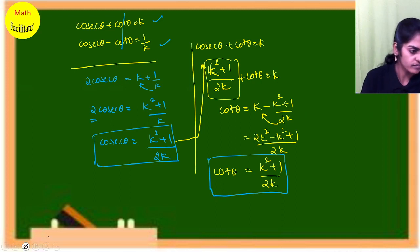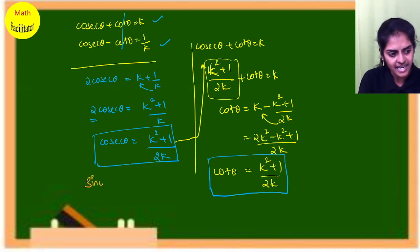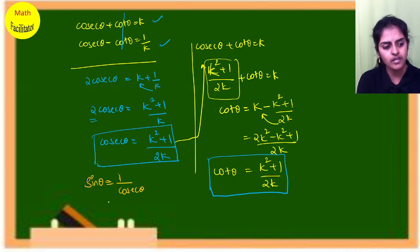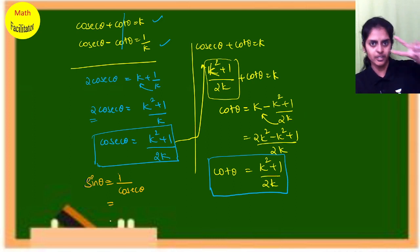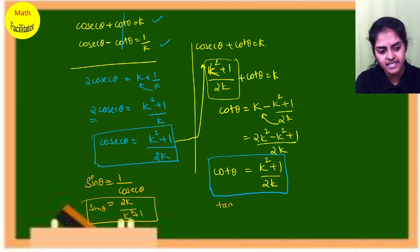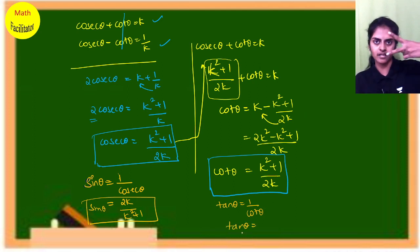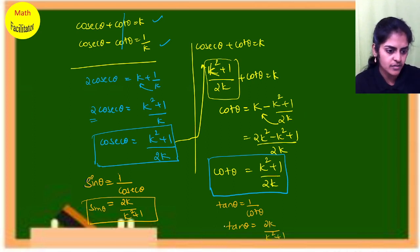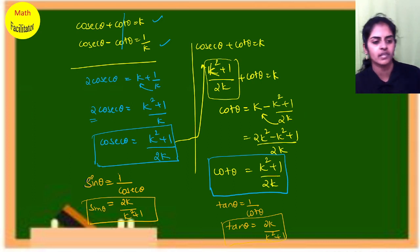We know that sin θ is the reciprocal of cosecant θ. Since cosecant θ = (k² + 1)/(2k), then sin θ = 2k/(k² + 1). And since tan θ is the reciprocal of cot θ, and cot θ = (k² − 1)/(2k), then tan θ = 2k/(k² − 1).